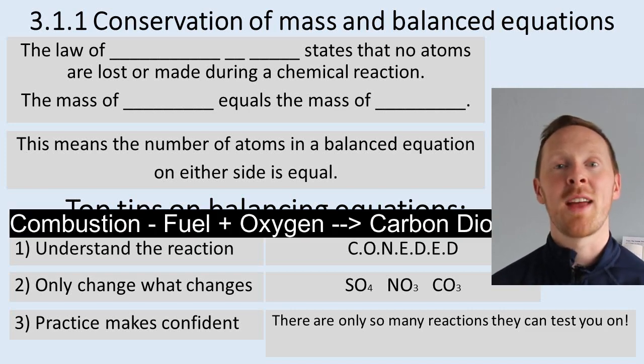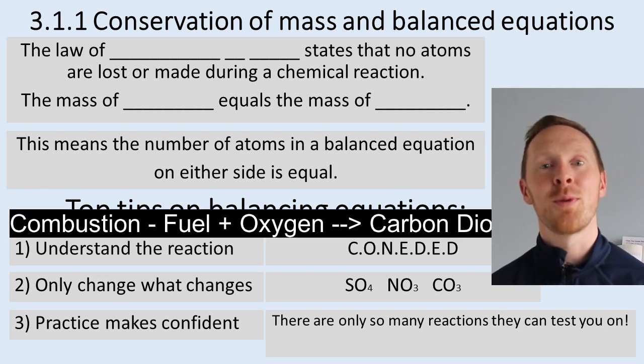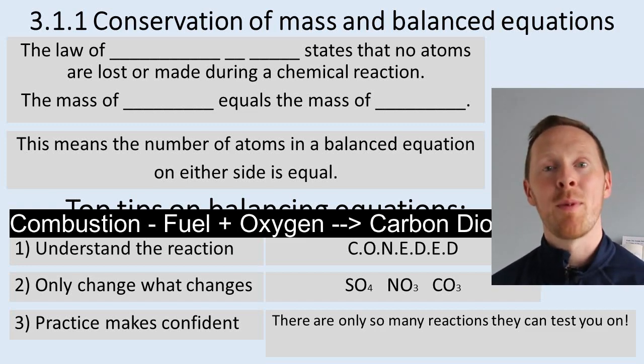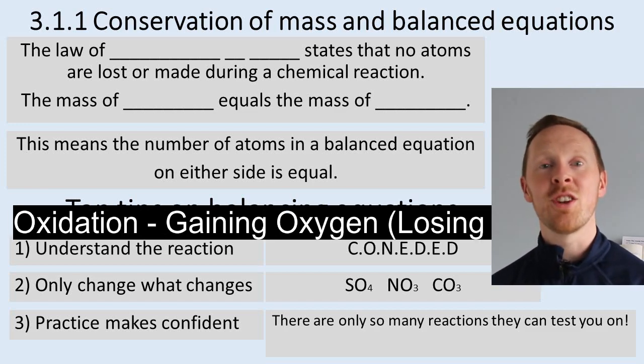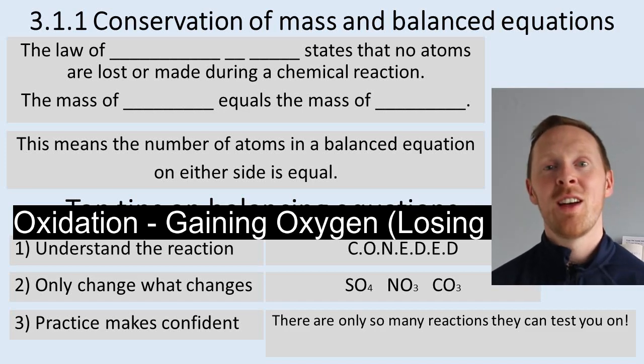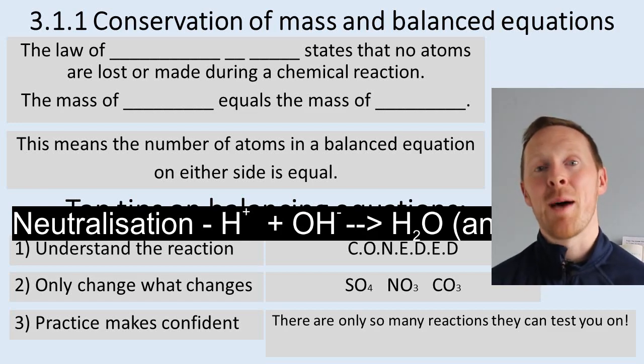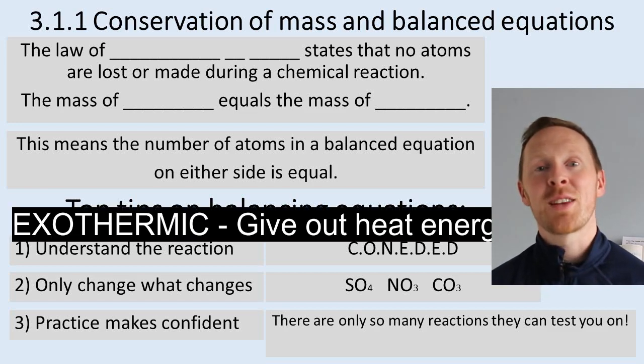The C stands for combustion reactions, where a fuel reacts with oxygen to produce carbon dioxide and water if it's complete combustion, or carbon monoxide or carbon and water if it's incomplete combustion. The O stands for oxidation, which is reactions which gain oxygen or they lose electrons. N is for neutralisation, where hydrogen ions react with hydroxide ions to make water plus a salt. The next one is E. E is for exothermic reactions, reactions that give out heat energy.